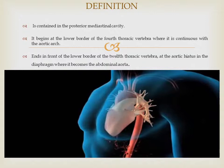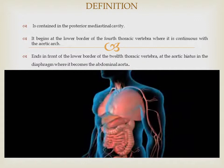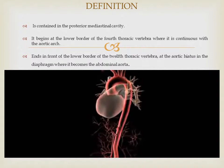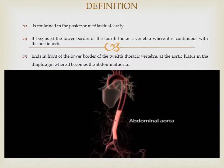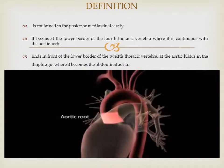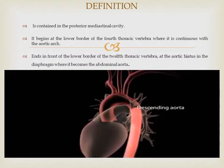The aorta is the largest artery in your body. Your heart pumps fresh oxygenated blood through your aorta to deliver oxygen and nutrients to all your organs and tissues. Your aorta is divided into two main sections: the thoracic aorta and the abdominal aorta. The thoracic aorta has four parts: the aortic root, ascending aorta, aortic arch, and descending aorta.